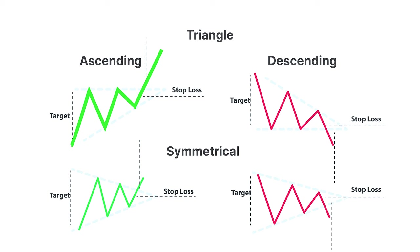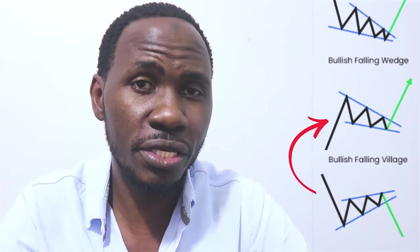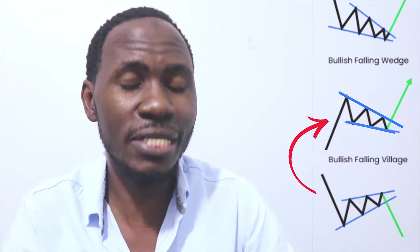Number three: wedges — rising and falling. These can act as continuation or reversal patterns depending on the preceding trend. Rising wedges are bearish and falling wedges are bullish, identified by converging trend lines. To confirm these patterns, use additional indicators like RSI or volume. Personally, I use price action or look for a pattern within the pattern itself.